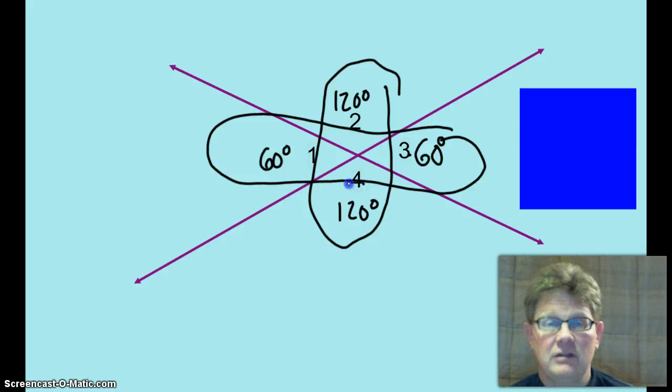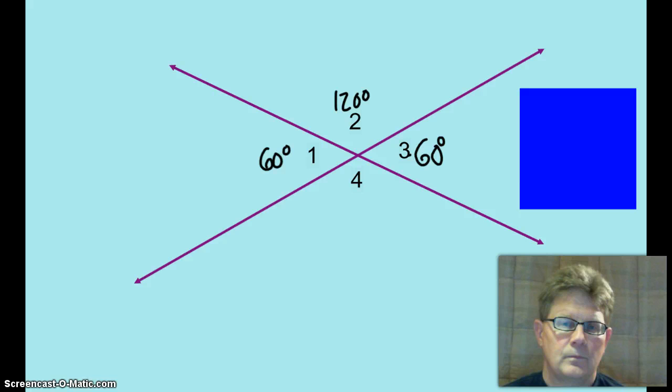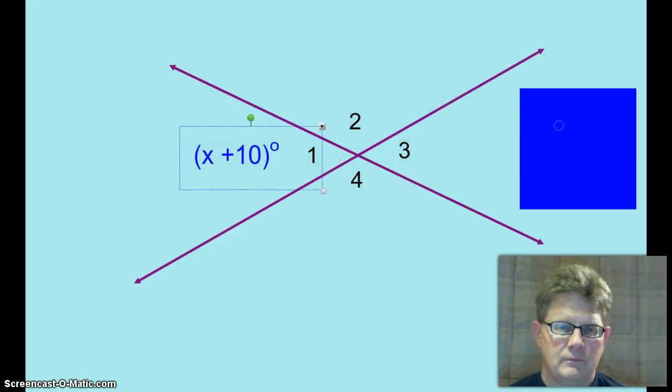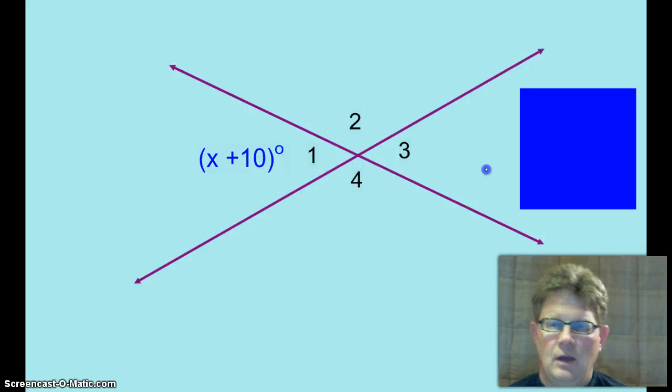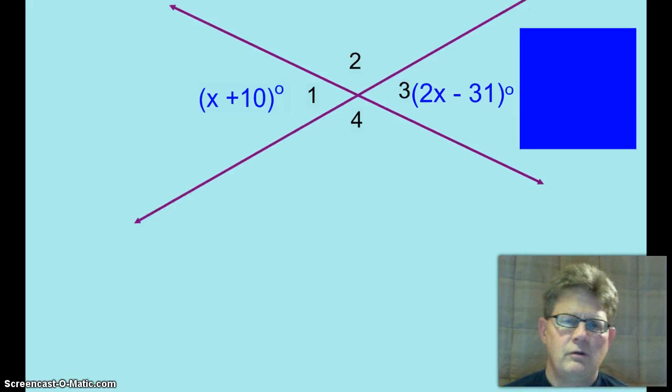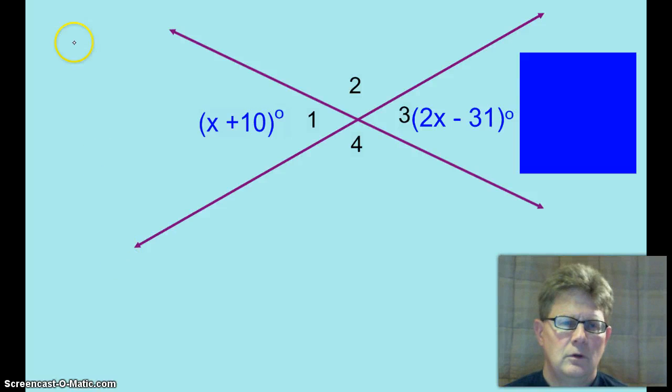Okay, what we got going on here is a couple of linear pairs and vertical angles. So if the measure of angle 1 is 60 degrees, what's the measure of angle 2? That's right, it's 120 degrees. Hey wait a minute, 2 and 3 are also vertical angles. Sorry, they're not vertical angles, they're linear pair. They add up to 180. So how big is angle 3? 60 degrees.